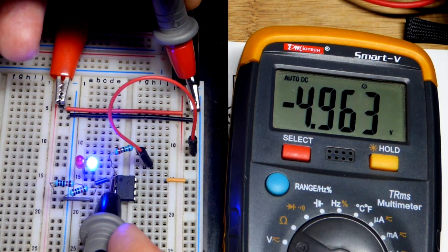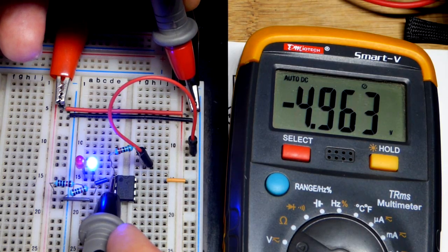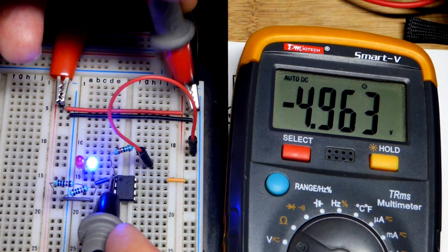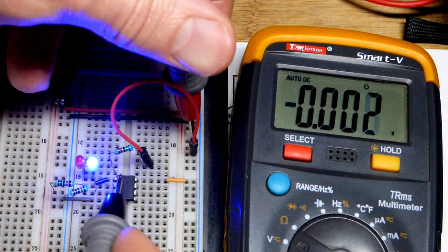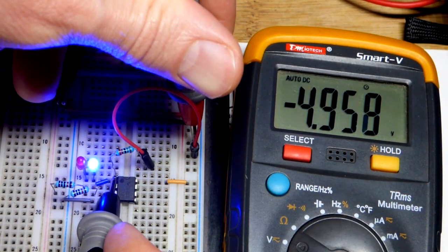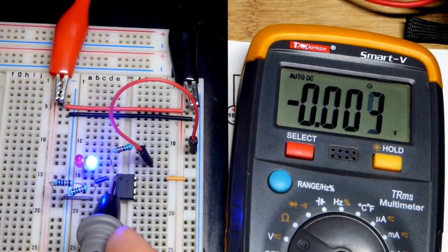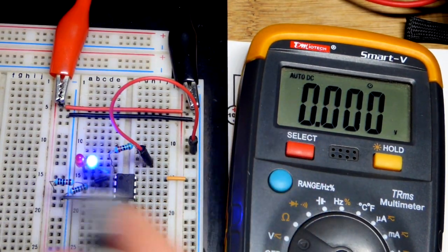It's basically an almost zero ohm resistance connection. Touching one spot is basically the same as touching another. Maybe I can plug into that. No, I can't plug into the board. If I push, I can. Wherever it's negative, I can connect it. You saw that negative voltage there.